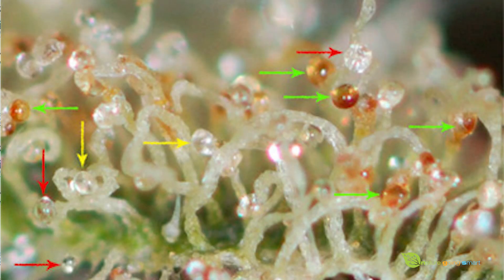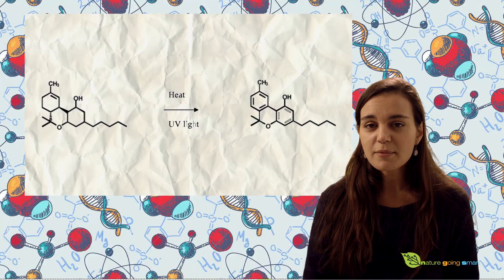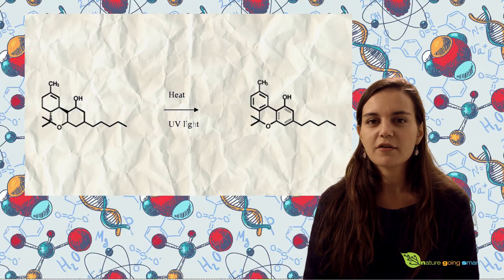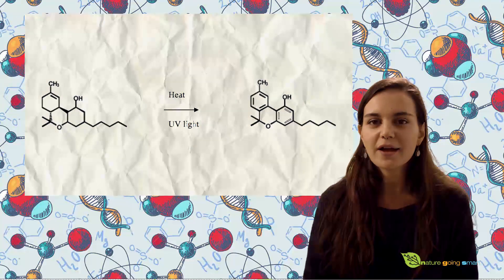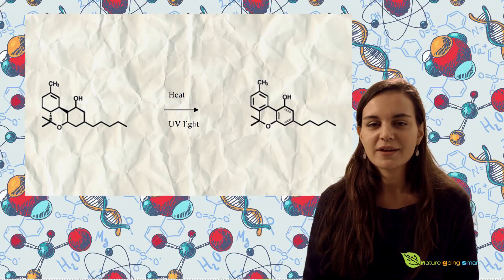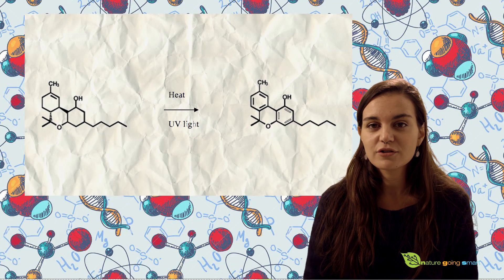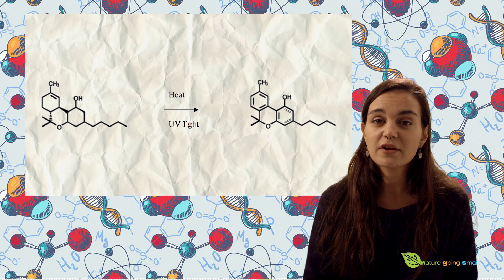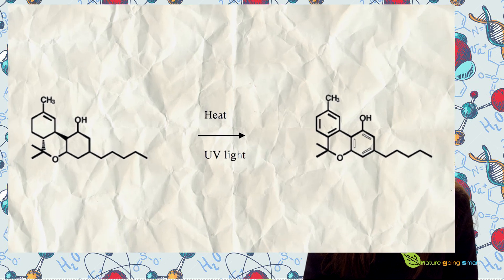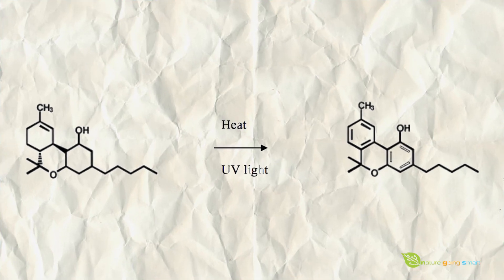Cannabinol is a primary product of degradation of THC. A fresh plant tends to yield just a little CBN. When a cannabis sample is exposed to air, heat, time, and storage, it degrades and THC oxidizes into its by-product, CBN.